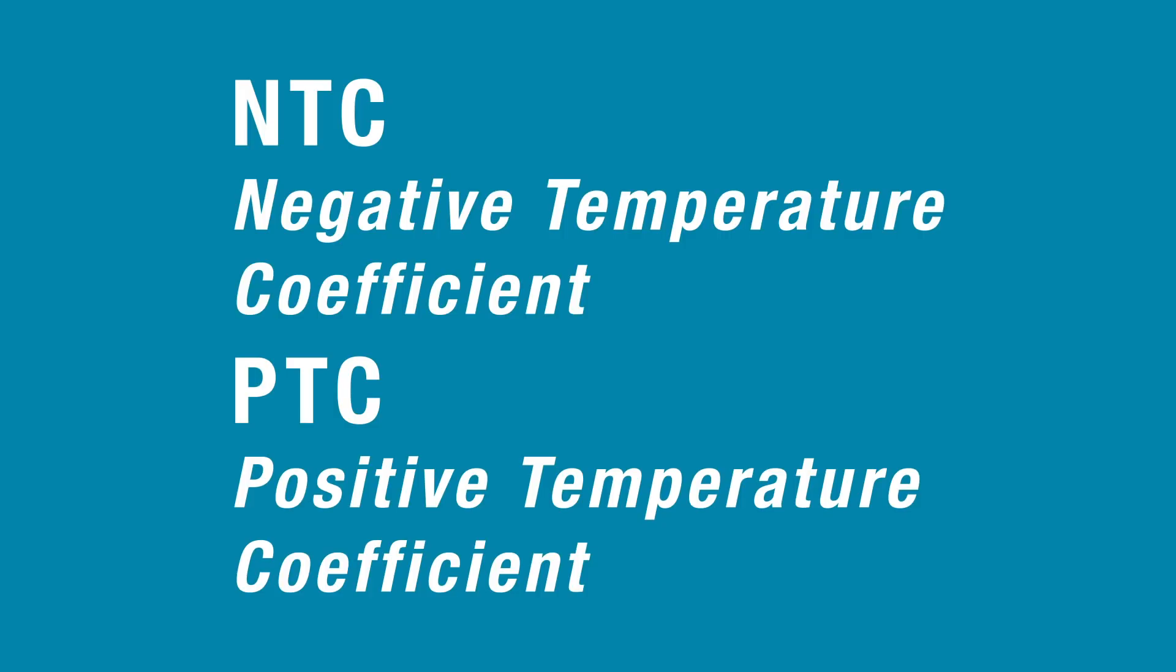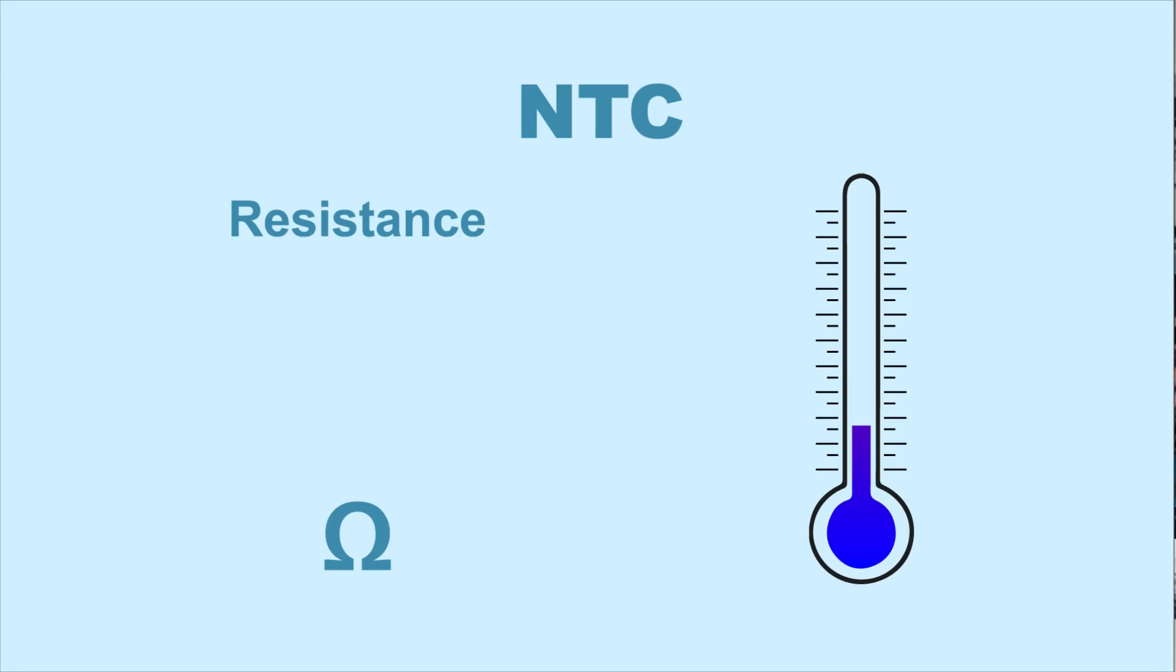NTC stands for negative temperature coefficient, while PTC stands for positive temperature coefficient. With NTC thermistors, a rise in temperature causes a decrease in resistance. Therefore, a decrease in temperature causes a rise in resistance. So warmer equals less resistance, colder equals more resistance.